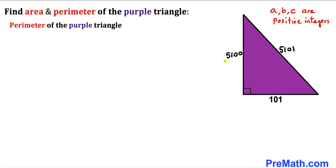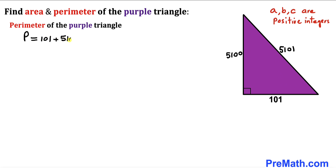Now let's calculate the perimeter of this purple triangle whose side lengths are 101, 5,100, and 5,101. The perimeter P = 101 + 5,100 + 5,101. Adding these together, the perimeter is 10,302 units.